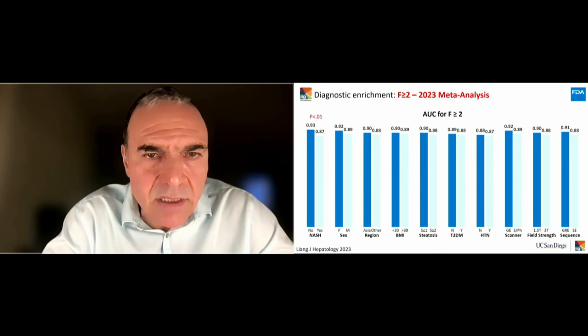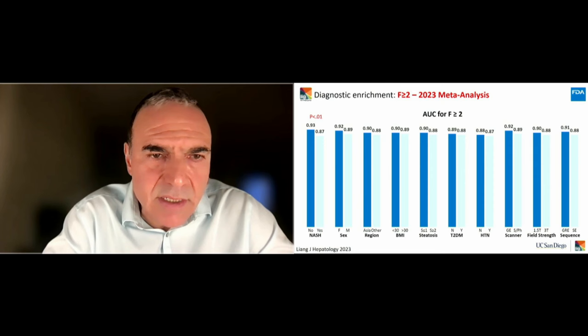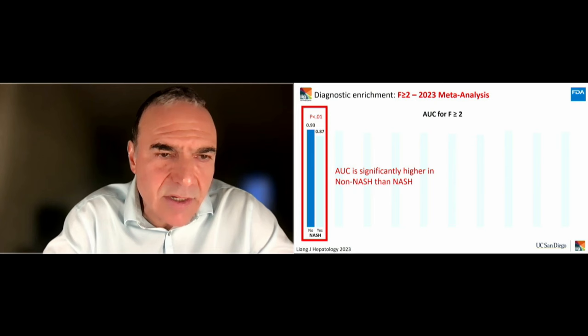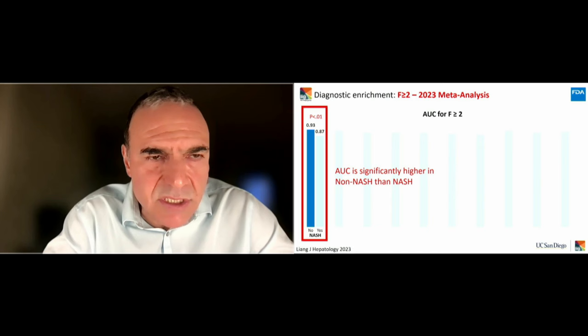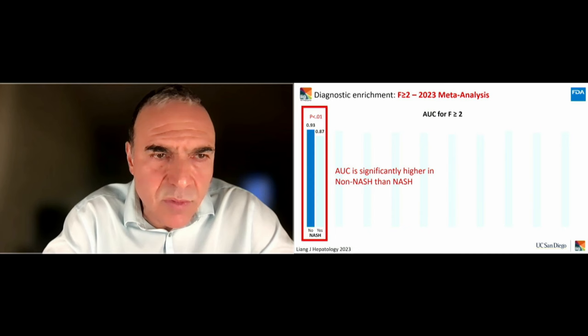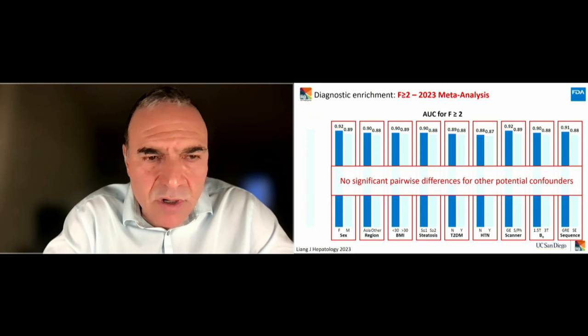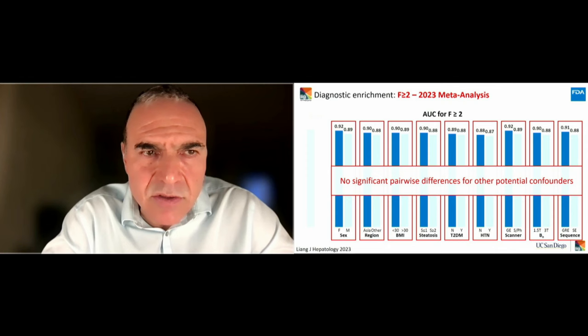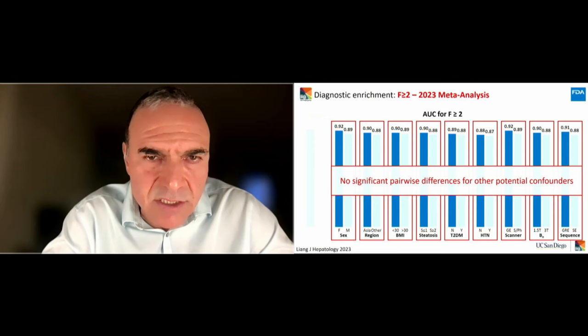The authors also performed sub-analyses for potential biological confounders. The presence or absence of NASH did have a statistically significant effect, with AUC higher in patients without NASH (0.93) than those with NASH (0.87), though I would argue this difference is not clinically meaningful. Importantly, for all other potential confounders — sex, geographic region, BMI, presence or absence of steatosis — there were no significant pairwise differences, which speaks to the robustness of MRE for detection of fibrosis greater than or equal to 2.